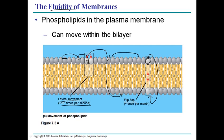In flip-flop movement, the hydrophilic head has to travel across the hydrophobic interior of the membrane. Since the head is hydrophilic and the core region is hydrophobic, this movement is very difficult. So flip-flop movement is very rare — occurring only once or twice per month.